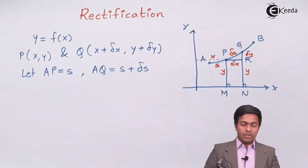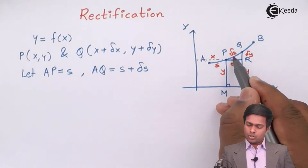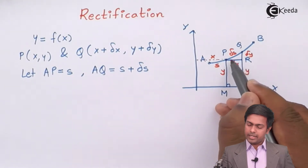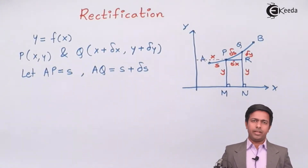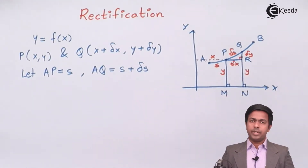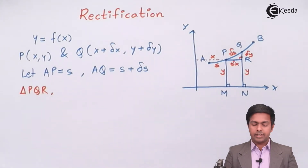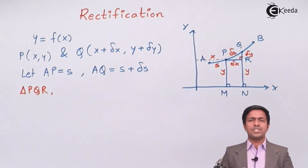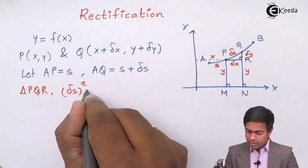Now, if Q comes very close to P, we get a triangle. As Q approaches P, we get Δy and Δx forming a right-angle triangle PQR, because the perpendicular makes a 90-degree angle. So triangle PQR is a right-angle triangle, and for any right-angle triangle we can apply the Pythagorean theorem.